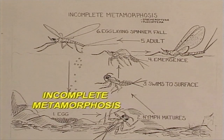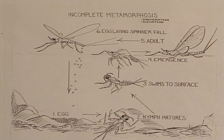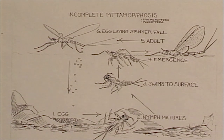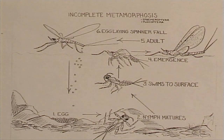The second type of life cycle is called incomplete metamorphosis. These flies are the mayflies and the stoneflies. They also start off as an egg but hatch into a nymph. The difference here is these flies do not pupate. The nymph simply swims to the surface as the emerger, attaches itself to the surface film, and hatches into the adult.